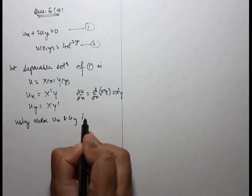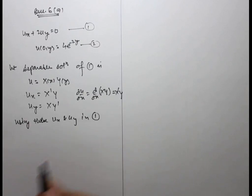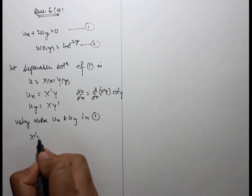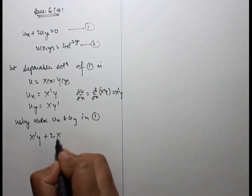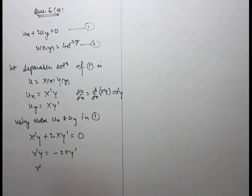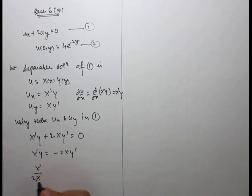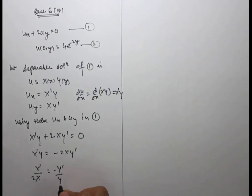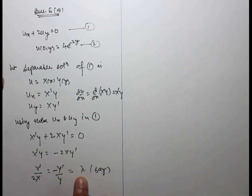Substituting ux and uy in equation 1, we get X'Y plus 2XY' equals 0. Separating the x terms on one side and y terms on the other side, equating each to a separable constant.